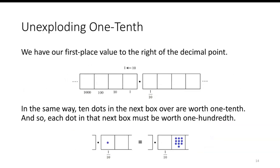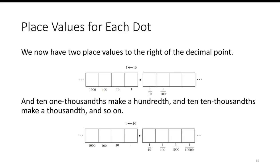So we have our first place value to the right of the decimal point, one-tenth. In the same way, ten dots in the next box over are worth one-tenth, and one-tenth of one-tenth is one-hundredth. So we now have two place values to the right of the decimal point. And ten one-thousandths makes up a hundredth, and ten ten-thousandths makes up a thousandth, and so on.